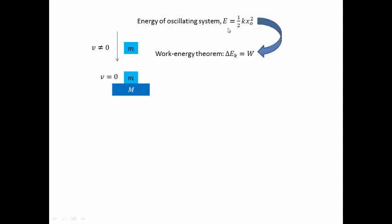Hence, the energy of the oscillating system decreases. And since the spring constant remains the same, the amplitude must have decreased in order for the energy of the oscillating system to decrease.